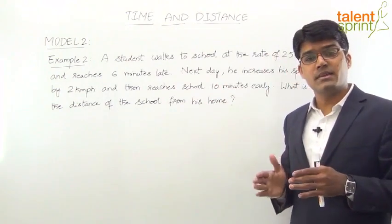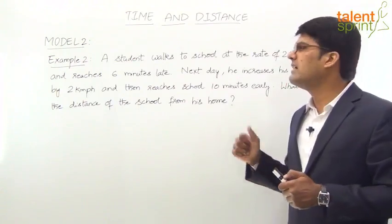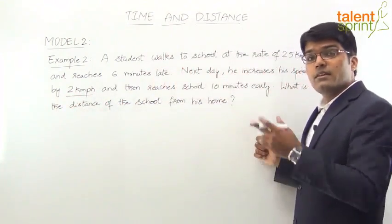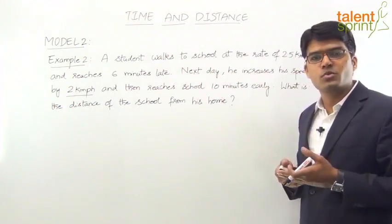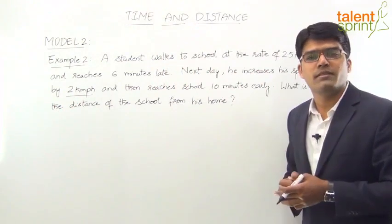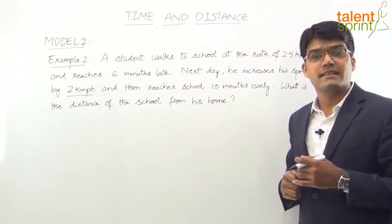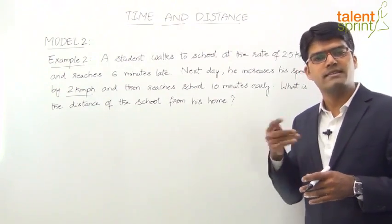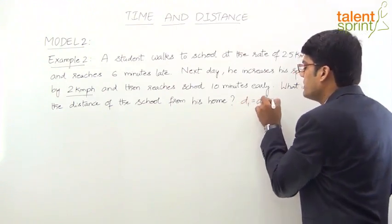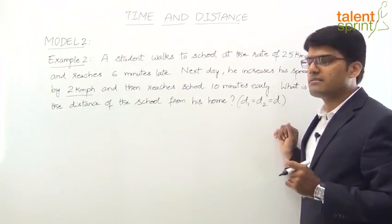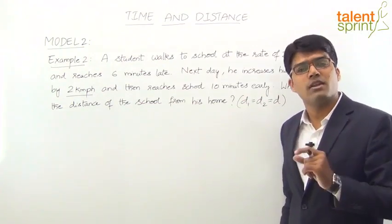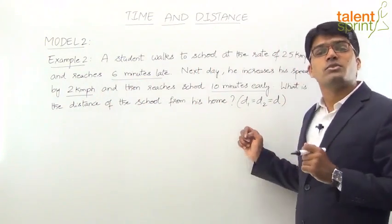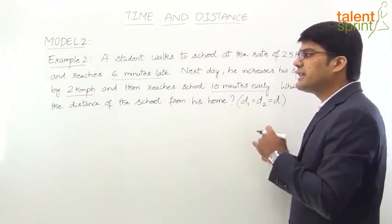There are two cases here. First case: speed is 2.5 km/hr, but arrives 6 minutes late. Next day, speed increases by 2 km/hr to 4.5 km/hr, and arrives 10 minutes early. The important point is that in both cases the distance traveled is the same — school to home. So D1 equals D2. However, this problem is more complex because the times given are 6 minutes late and 10 minutes early. There is a shortcut formula to solve this directly.